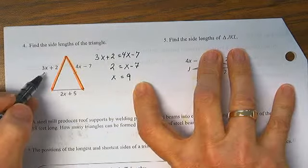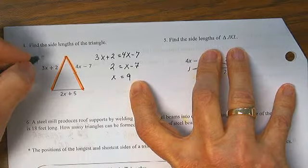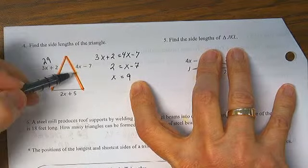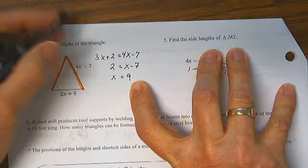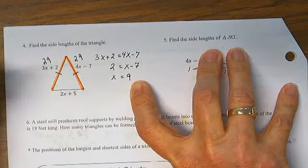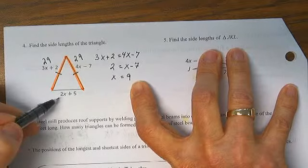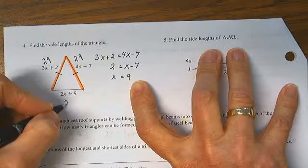3x plus 2. 3 times 9 is 27. And this side is 29. 4 times 9 is 36 minus 7. That's also 29, which makes sense because these two sides are equal. And the third side is 2x plus 5. 2 times 9 is 18. Plus 5 is 23.